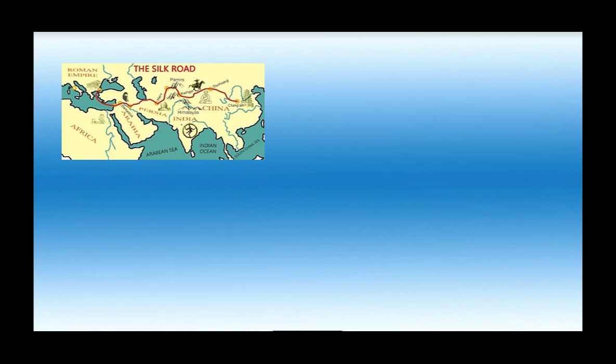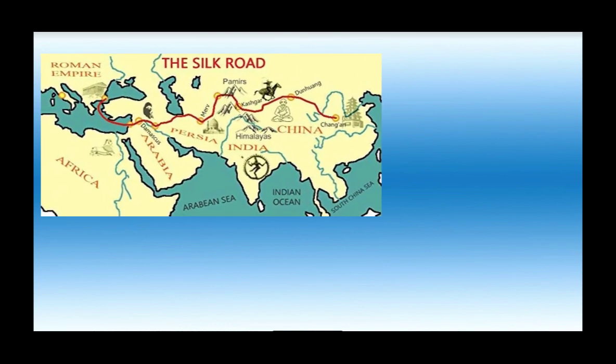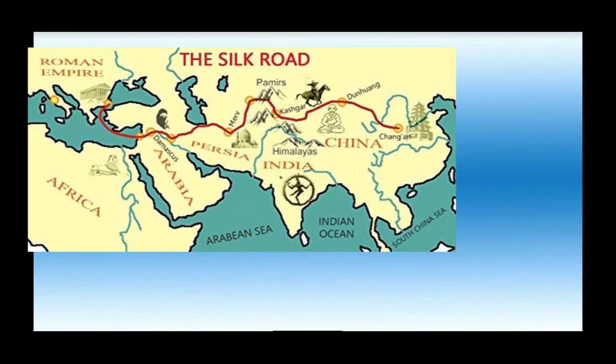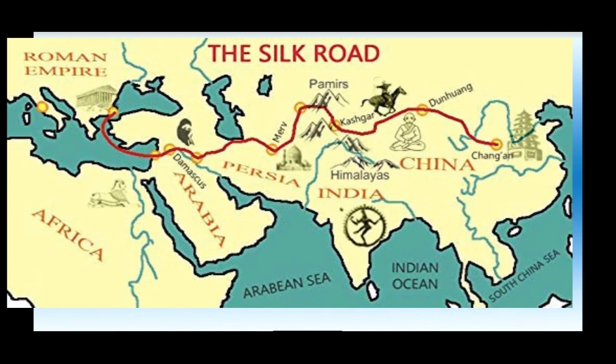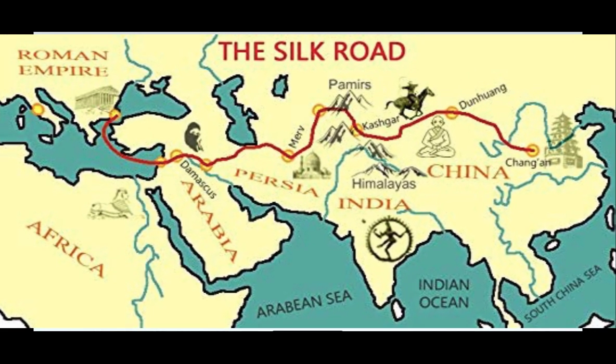First, there is no such thing as 'the Silk Road' — they were called the Silk Roads. They were a series of disconnected pathways that eventually connected people across regions for trade. This was the largest land-based trade route in history.